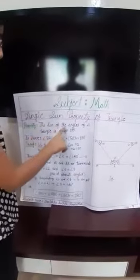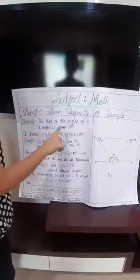This is my model. So I will show you. Its property is the sum of the angles of a triangle is always 180.